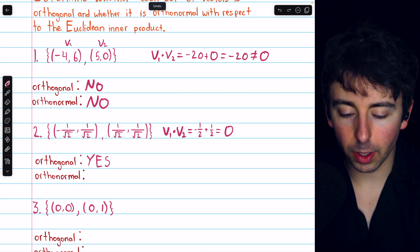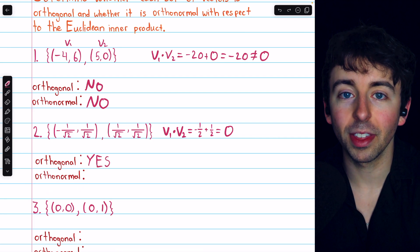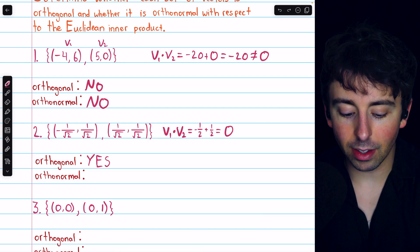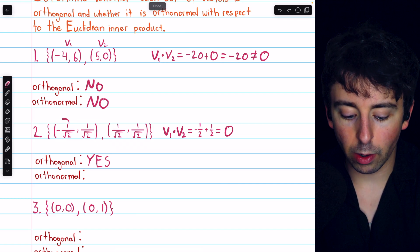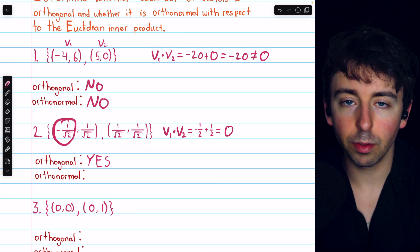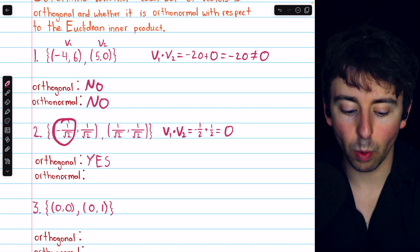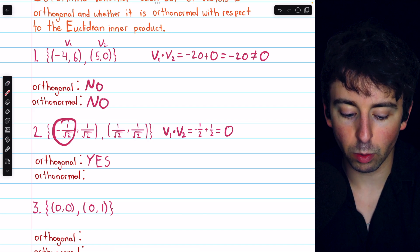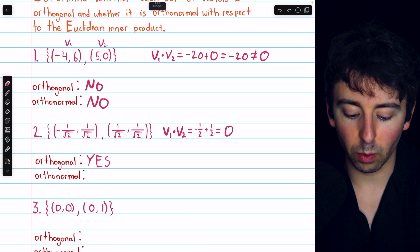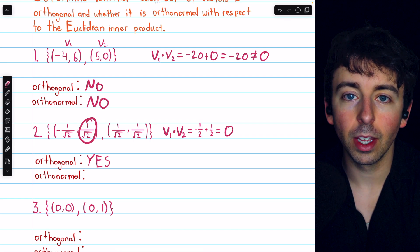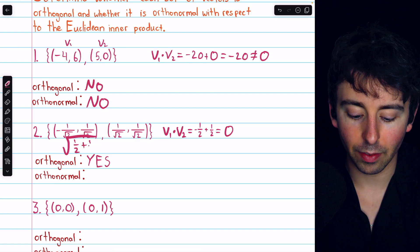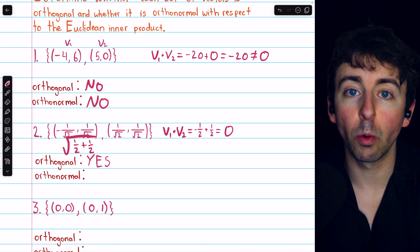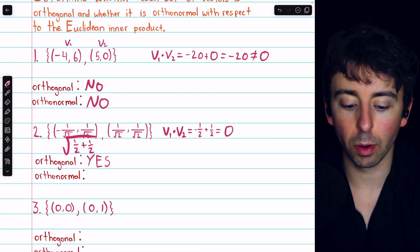Then, are they orthonormal? Well, that depends on whether or not they are unit vectors. If we consider the norm of this first vector, that would be the square root of the sum of the squares of the components. The square of this component is positive 1 over 2, since when we square it, the negative and the square root both go away. Now, when we square this component, we also get 1 over 2. So, in the square root, in calculating the norm, we would just have a half plus a half, so the square root of 1. So, yes, the norm is 1.